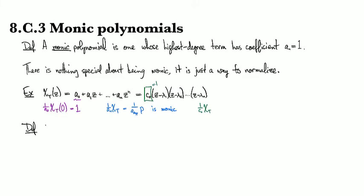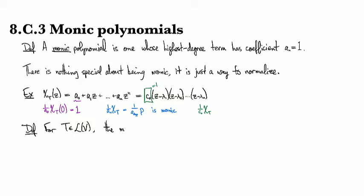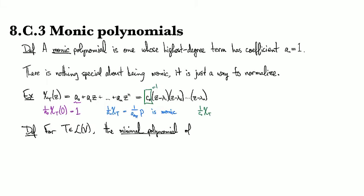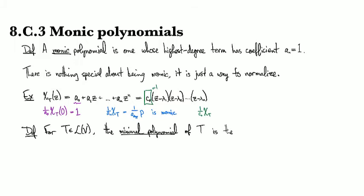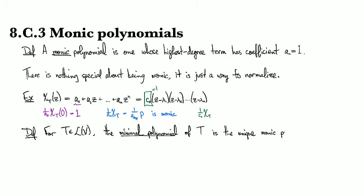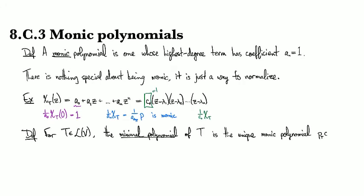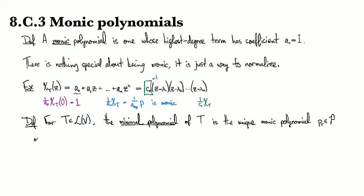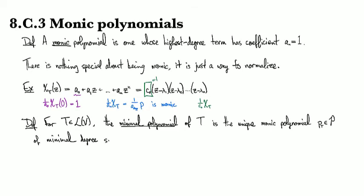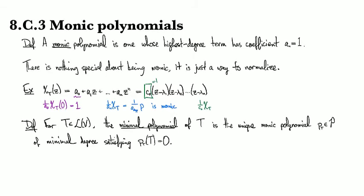But we have the following definition. So for an operator T, the minimal polynomial of T is the unique monic polynomial. See, if I didn't have the word monic in there, then there'd be no way to get uniqueness. So the unique monic polynomial, and we'll call it P_T, so it's a polynomial of minimum degree which satisfies P_T of T equals 0.